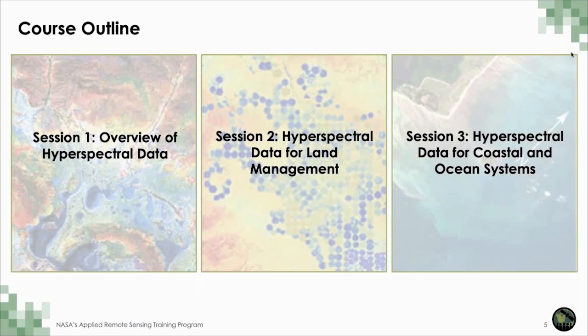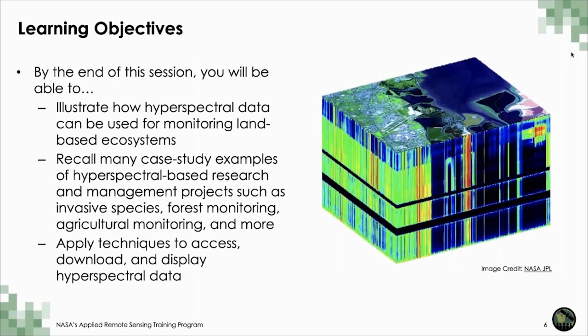This series will consist of three sessions. During the first session we provided a general overview of hyperspectral data. In today's session we will give specific case study examples of how hyperspectral data for land management can be used. Then for the final session we will focus on coastal and ocean systems. By the end of this session you will be able to illustrate how hyperspectral data can be used for monitoring land-based ecosystems, recall many case study examples such as agricultural monitoring, invasive species, forest monitoring, and more, and apply techniques to access, download, and display hyperspectral data.